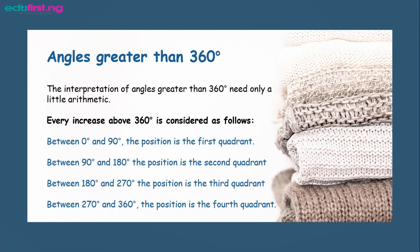Once the angle crosses 360 — say 370, 380 — the increase above 360 determines the quadrant. If the increase above 360 is between 0 and 90 degrees, we consider that angle to be in the first quadrant, so an angle like 370 is in the first quadrant. If the increase from 360 is between 90 and 180 degrees, we consider it in the second quadrant. If it is between 270 and 360, we consider the angle to be in the fourth quadrant.